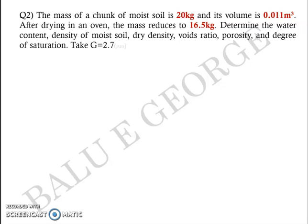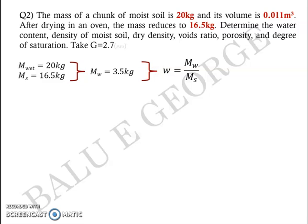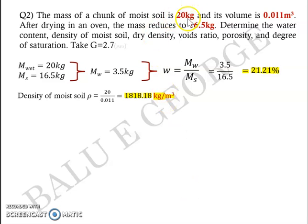Taking a look at that question, wet mass is given as 20 kg. After drying in an oven, mass of solids is 16.5 kg. So water which got evaporated will have a mass of 3.5 kg from which you can find the water content, w equals mw by ms. mw is 3.5, ms is 16.5 and you get water content to be around 21.21 percentage. The density of the moist soil rho is equal to 20 by 0.011, and you get 1818.18 kg per meter cube density of the moist soil.